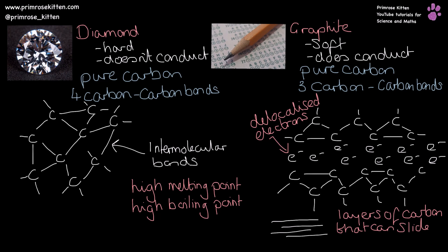Graphite makes three carbon-carbon bonds, which leads to the properties of being soft and allowing graphite to conduct. Because it makes three bonds, they are arranged in layers, with delocalized electrons in the middle. These layers of carbon can slide over each other, making graphite soft. And the delocalized electrons mean graphite is able to conduct electricity — very different properties from simple covalent compounds.